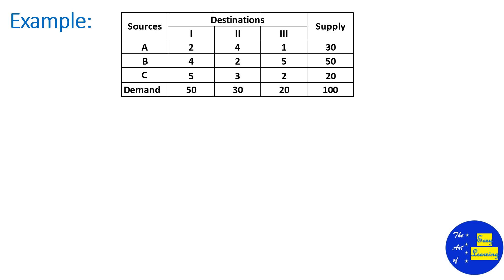Now let us look at the problem. In the problem we have three sources and three destinations. First, check whether it is balanced or not. Total supply equals total demand, so it is a balanced transportation problem.